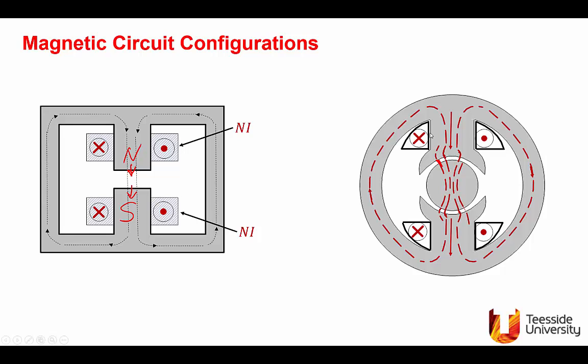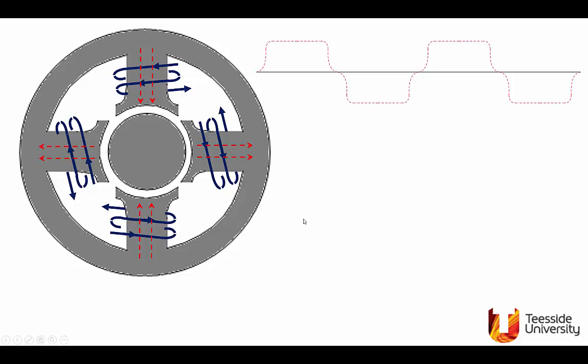So this configuration here, we can see how the flux is behaving. And we can say, this is now the flux is going out of here. So that's north. And it's going into this surface. So this is south. So we call this a two-pole arrangement. The previous configuration was a two-pole machine.